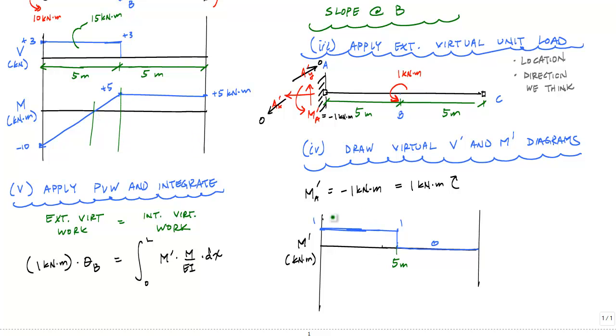I would integrate this first segment up to whatever the zero is with this segment over here, and then I would take this segment and integrate it with this segment. And then this segment would be integrated by this segment here, which would just be zero because the virtual moment from five to ten meters is zero. So that's one choice you have.